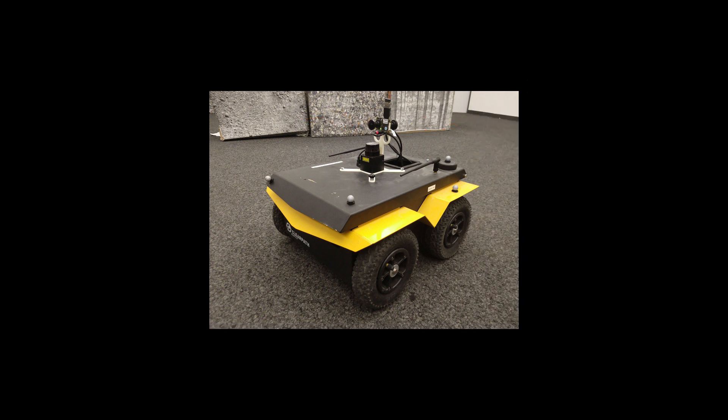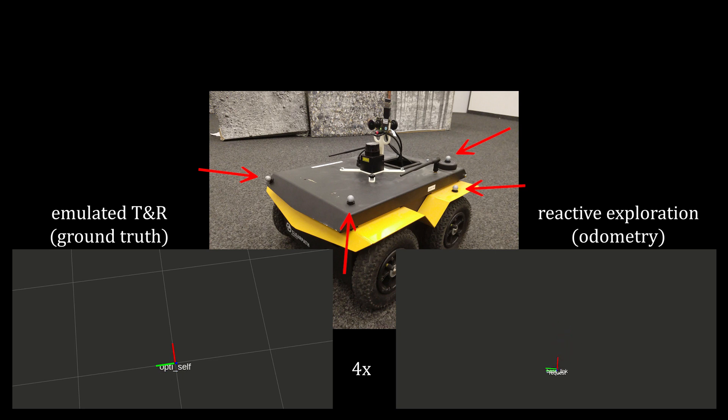Finally, we use a motion capture system for ground truth. Since implementing visual teach-and-repeat from scratch was outside the scope of this paper, we also use ground truth from the motion capture to mimic visual teach-and-repeat.